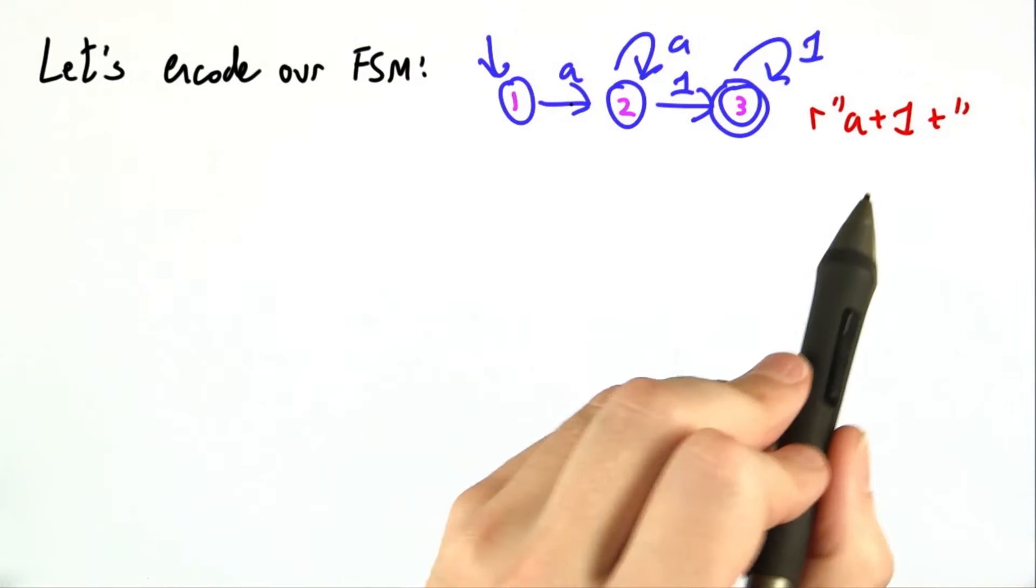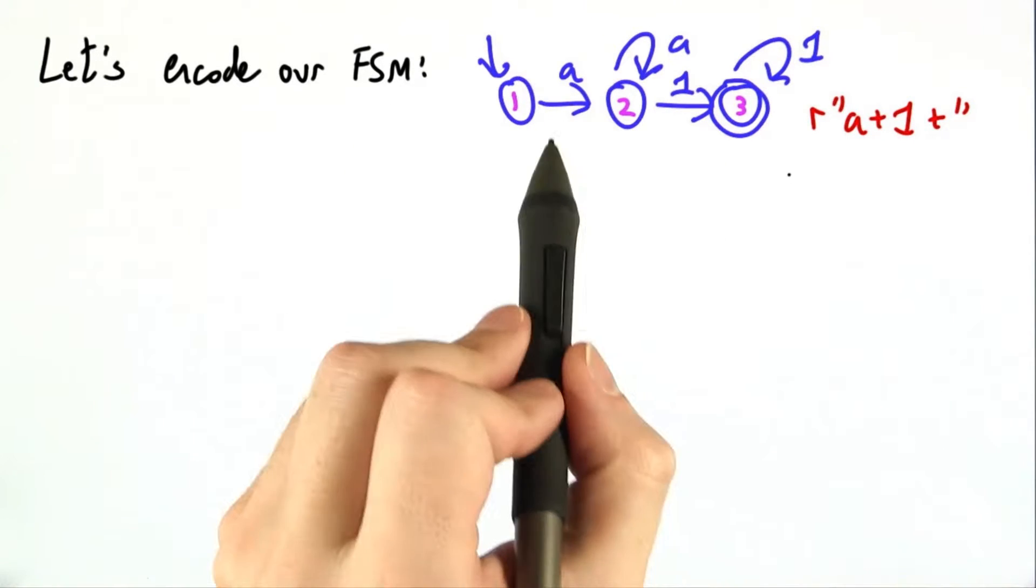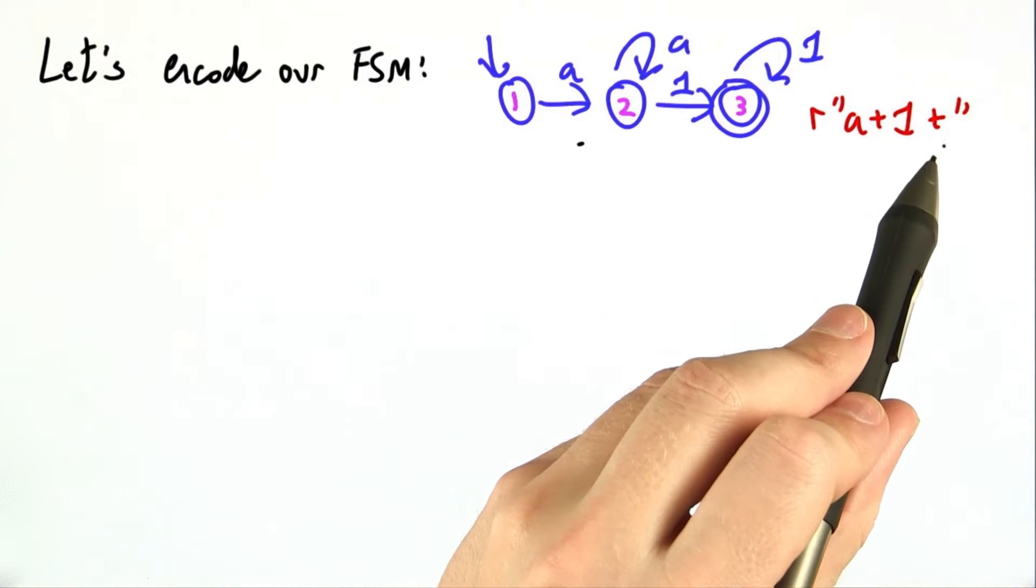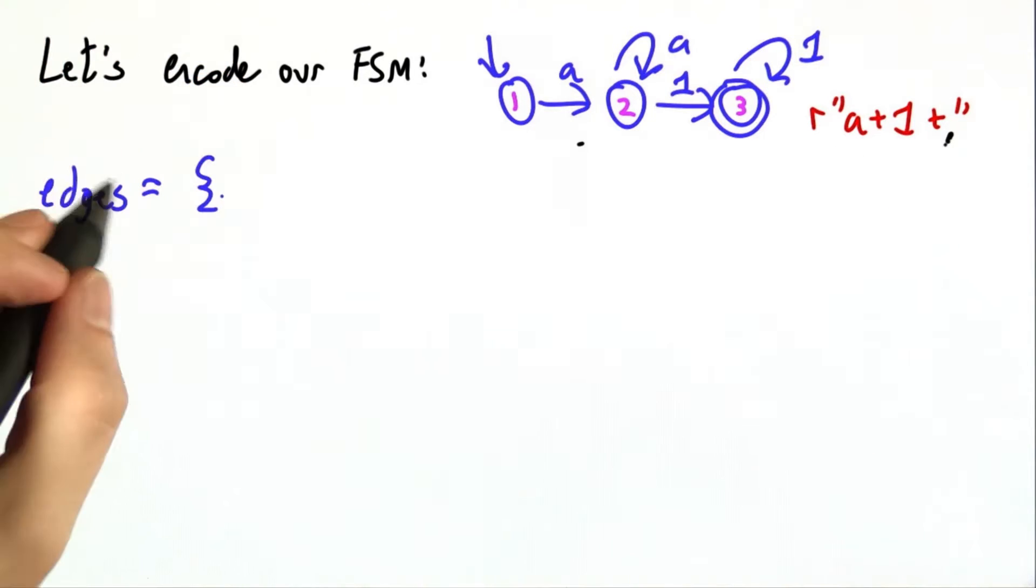With all of that in mind, let's encode our finite state machine in Python. Here I've redrawn our finite state machine for A plus 1 plus, and we said before that we were going to make the edges a mapping or a dictionary.